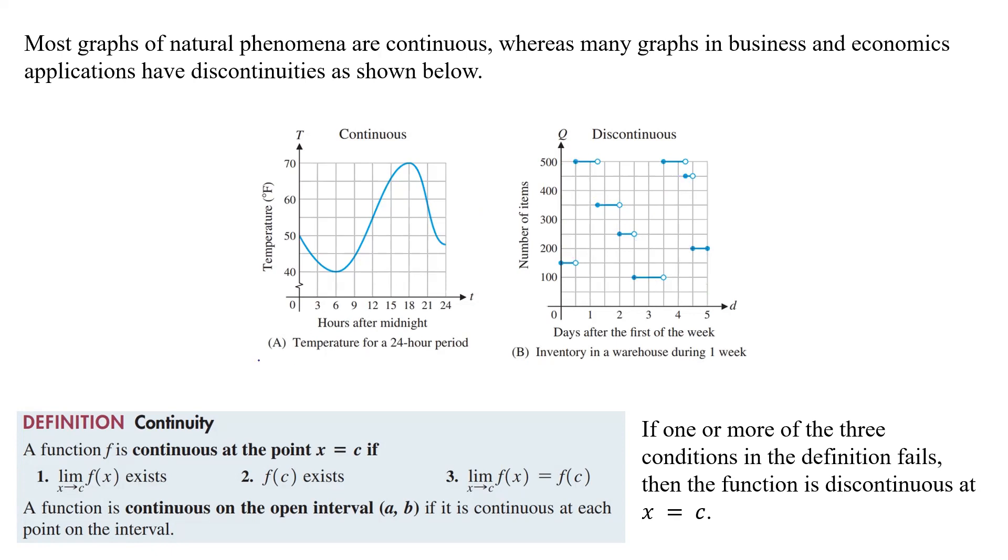Now for continuity, what is the definition? So a function f is continuous at the point x equals c. So whatever point we want to say, maybe nine hours. If the limit of f of x as x approaches c exists. Okay, well, if we want to go here, the limit from the left is equal to the limit from the right and they both look to be about 45.